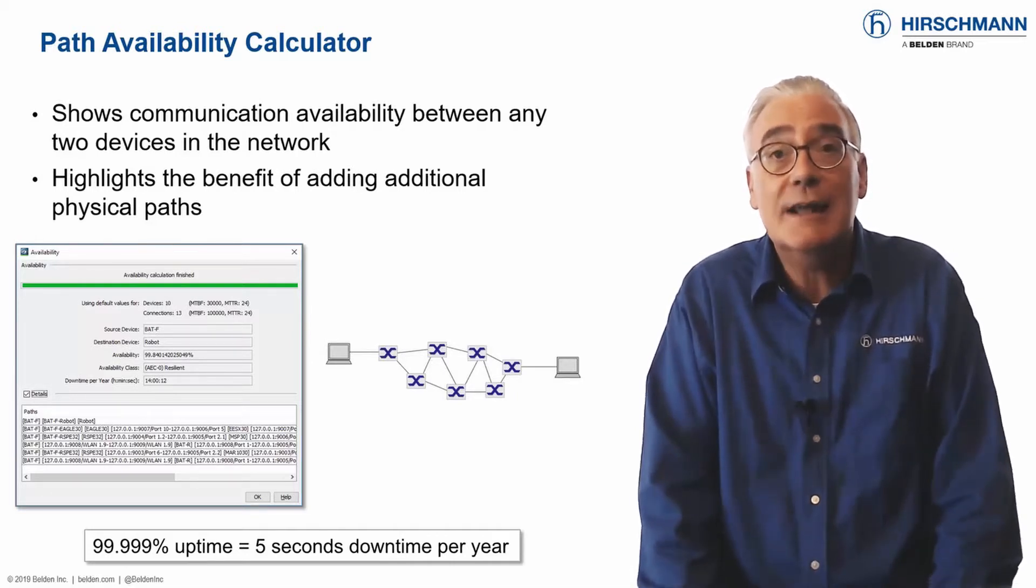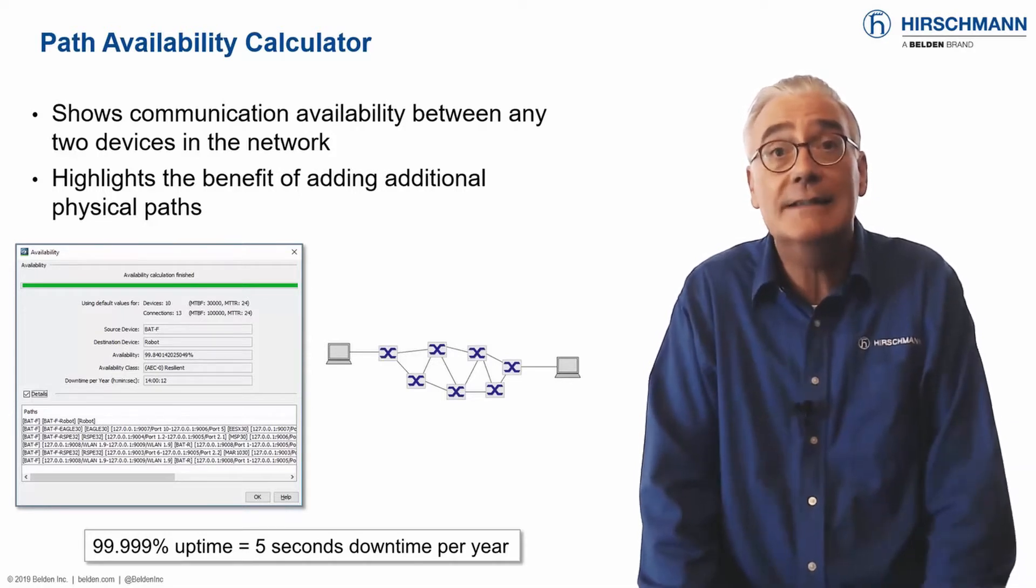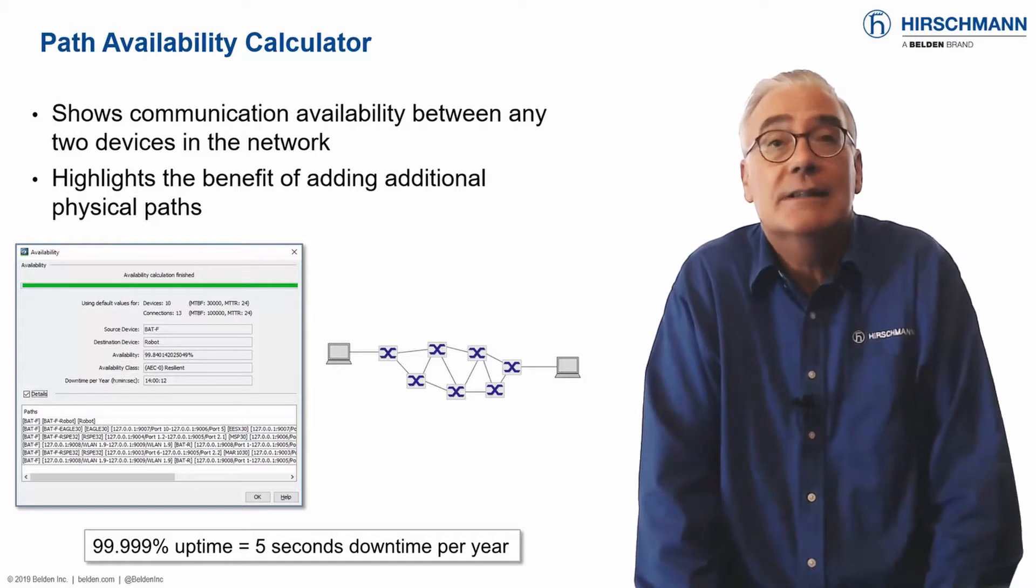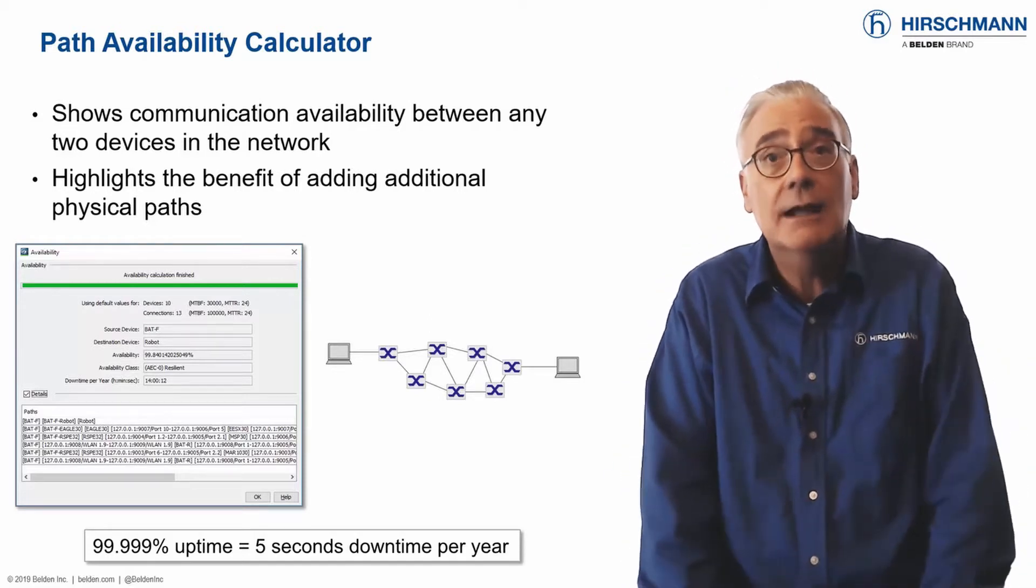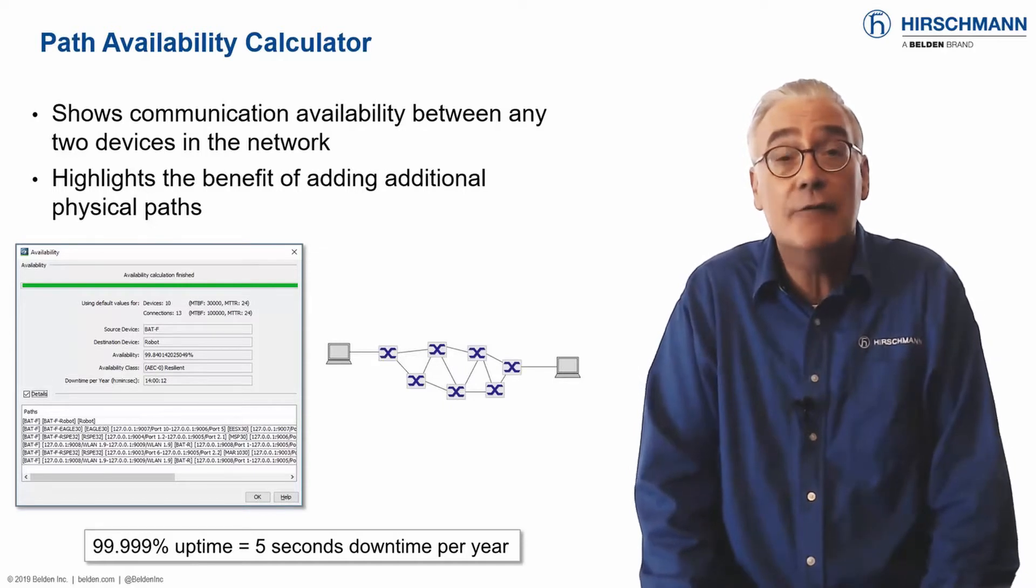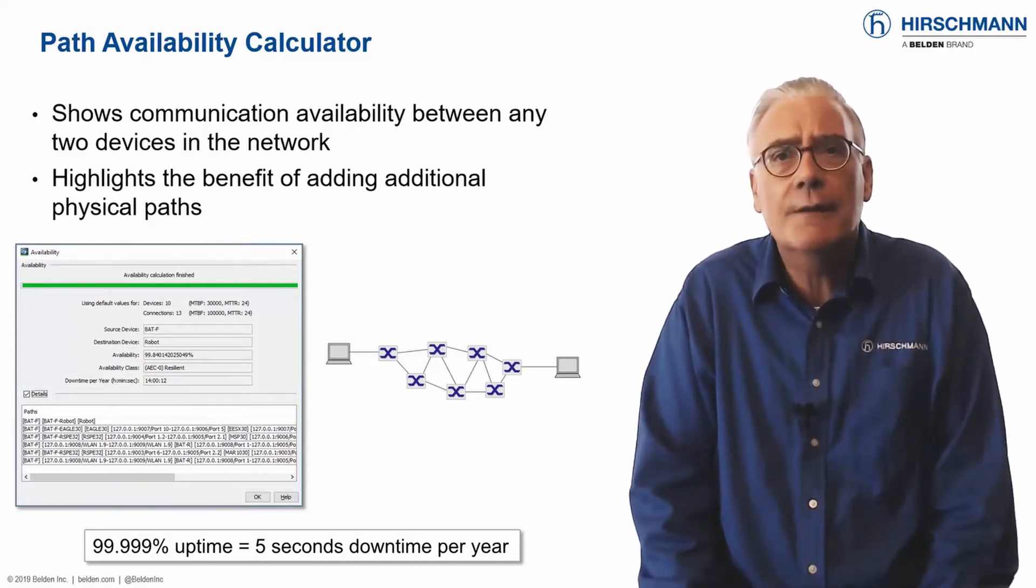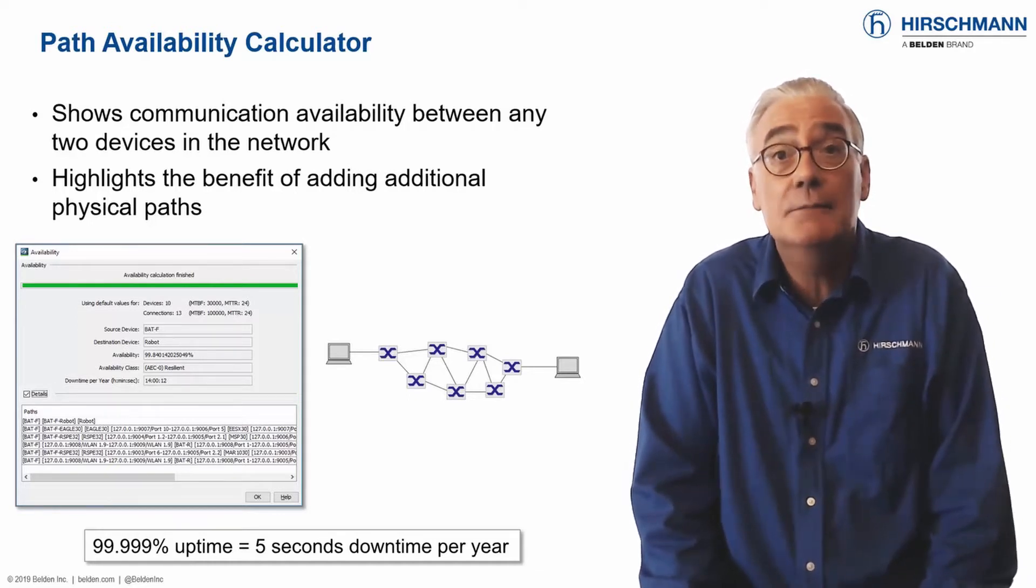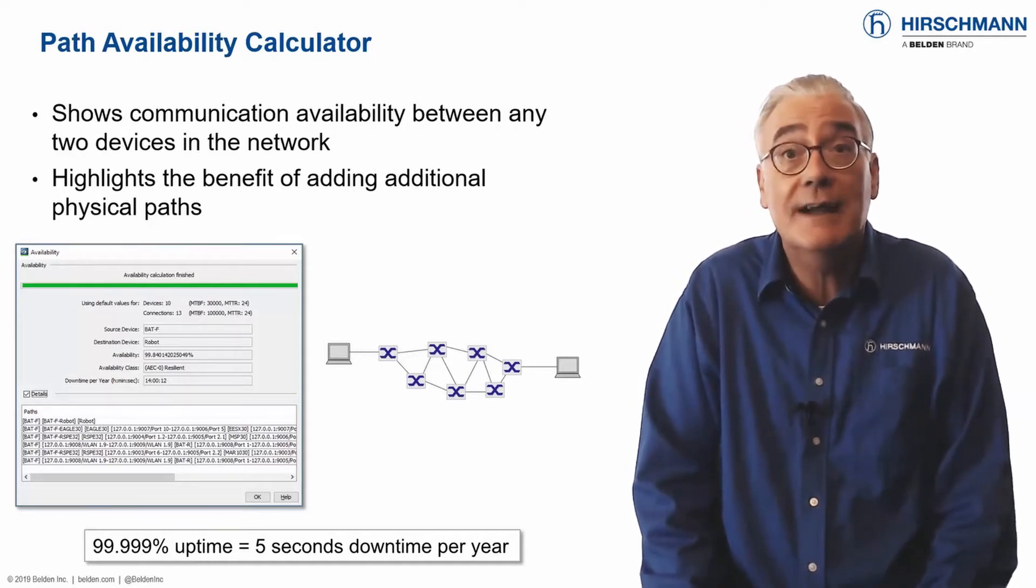Industrial HiVision includes a path availability calculator. To be clear, the tool cannot calculate the availability of a network. But, as its name suggests, it can calculate the availability of a path through the network. This depends on the mean time between failures and the mean time to repair of the network devices, and the redundant paths between the devices.